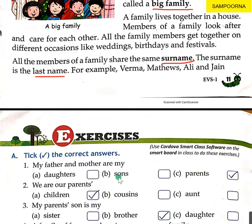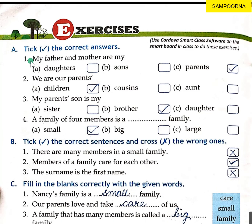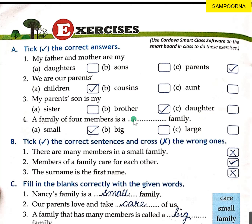Now students, let's look at the exercises. Exercise A — fill in the correct answers. Number one: my father and mother are my parents. Number two: we are their children. Number three: my parents' son is my brother. Number four: a family of four members is a small family. Four members at home — they are a small family. Okay?